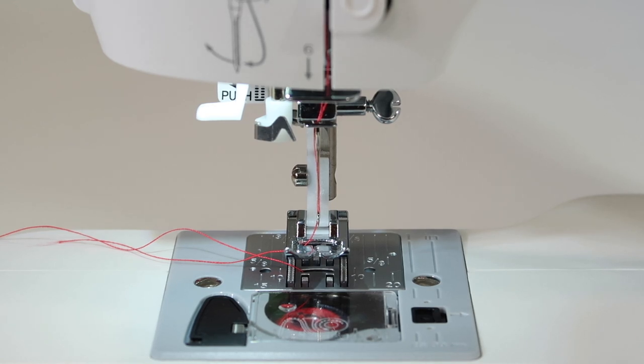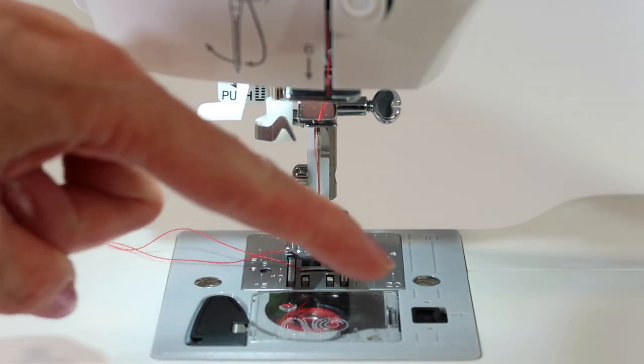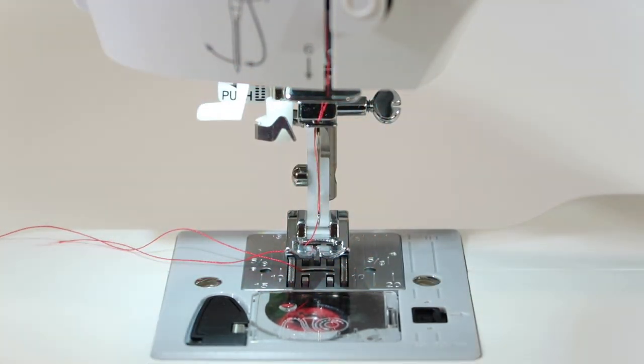Think about if you were a needle threader, how small would you need to be to actually squeeze through the eye of the needle? Not just squeeze through, you need to actually be in the shape of a hook that is going to be able to pull the thread through.